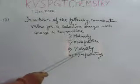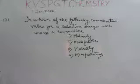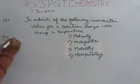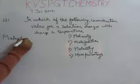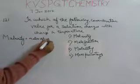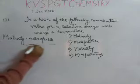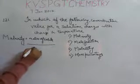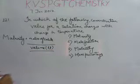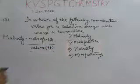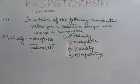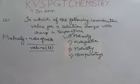The options are molarity, mole fraction, molality, and mass percentage. See, in case of molarity, what is the formula for molarity? It is the moles of solute per liter volume of solution. When volume is dependent on temperature, so the correct answer is molarity, whereas mole fraction, molality, and mass percentage are independent of temperature.